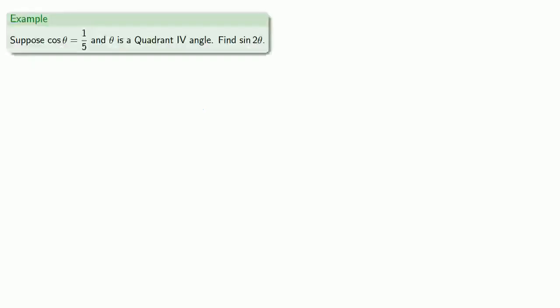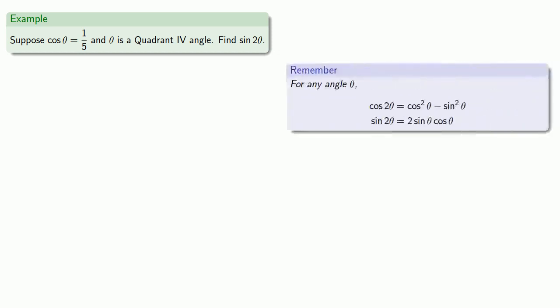For example, suppose cosine theta is one-fifth and theta is a quadrant four angle. Let's find sine of two-theta. So our double angle identity for sine is: sine of two-theta equals two sine-theta cosine-theta.